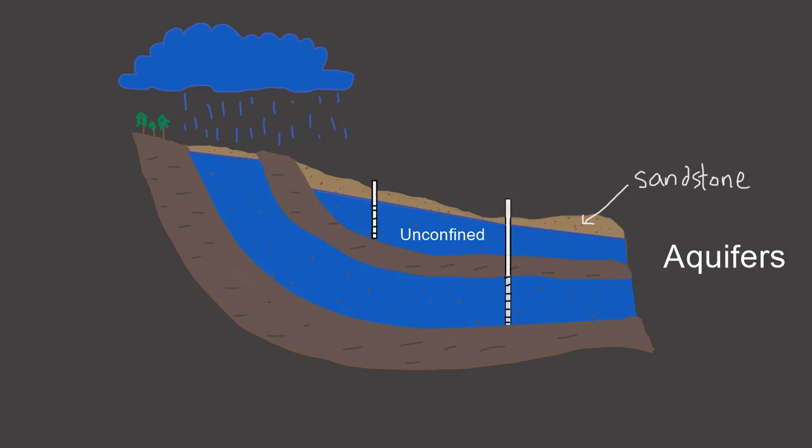Let's compare that to our confined aquifer. This one down here would be a confined aquifer because it's got a confining layer above it. A confining unit is basically just a rock unit with very low hydraulic conductivity.